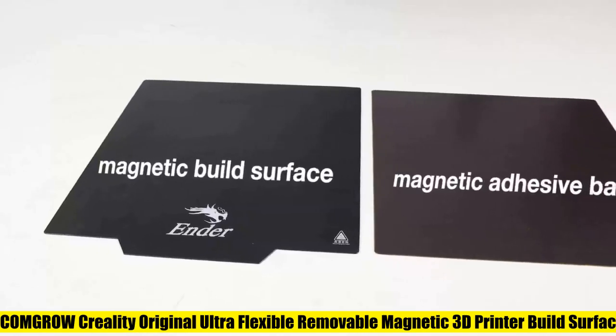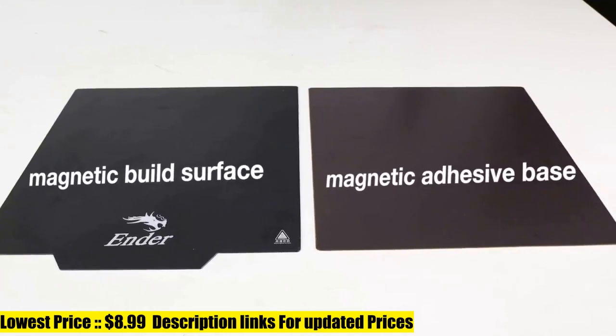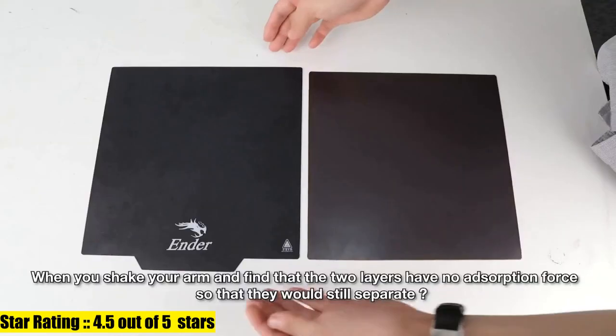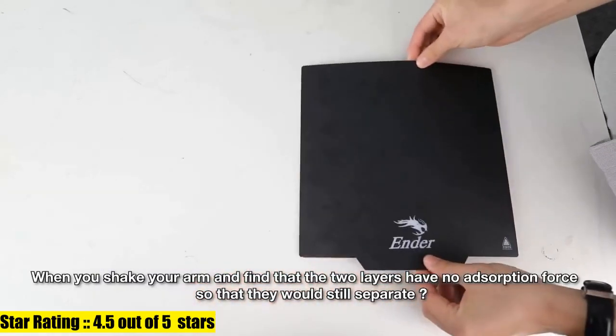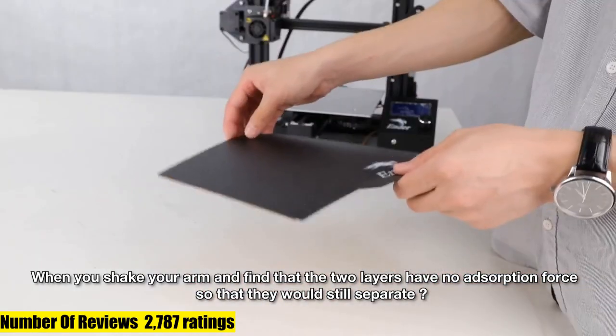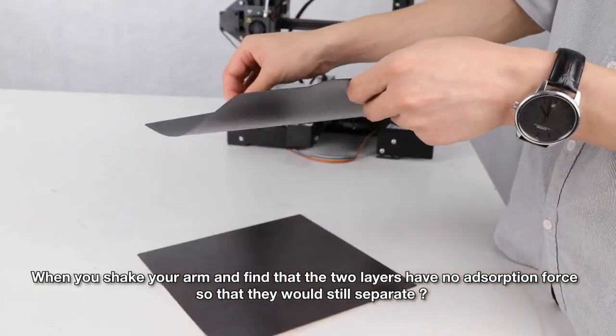COMGROW Creality Original Ultra Flexible Removable Magnetic 3D Printer Build Surface Heated Bed Cover. This flexible removable magnetic bed provides easy removal for 3D printing and is designed as a printing platform for PLA and PLA-based materials.